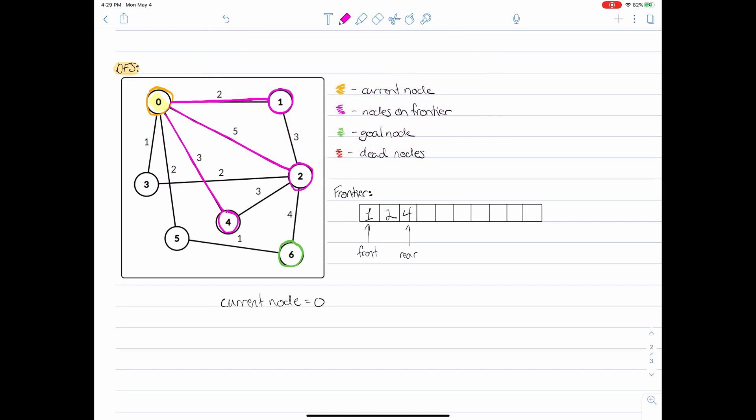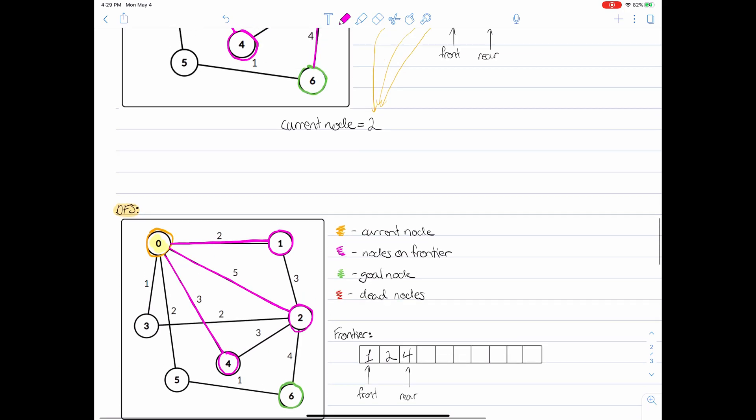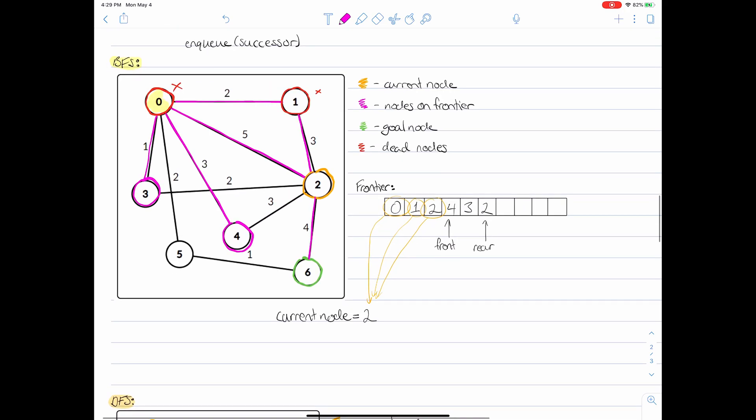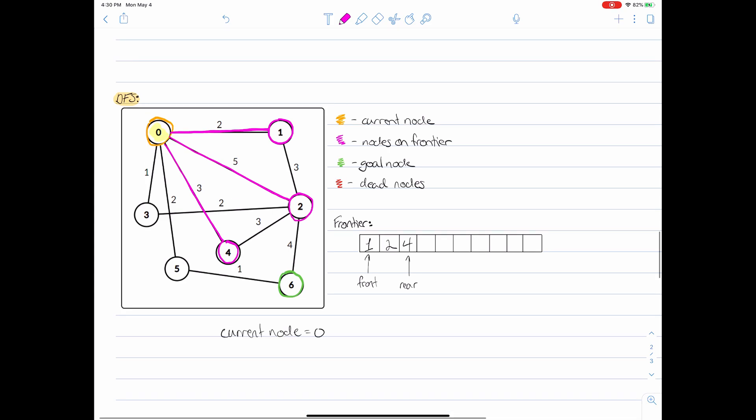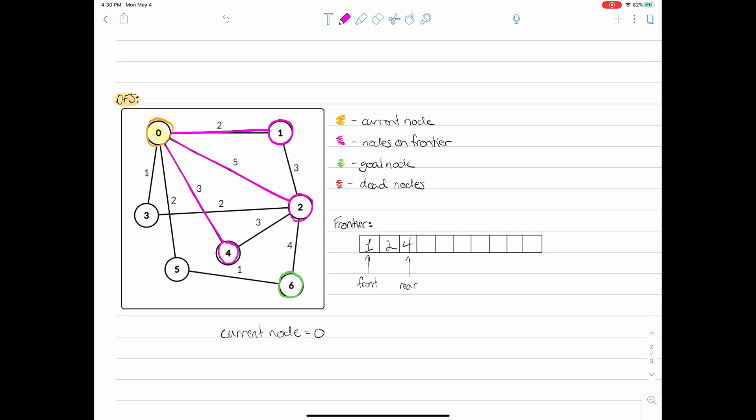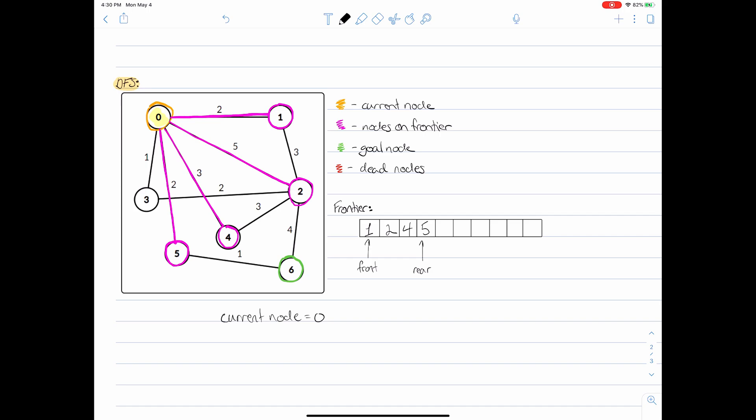Notice that this is actually the exact same process that we went through when we were doing the BFS example. So moving on, the next successor of node zero is this node five just right over here. And then we pop the question: Is node five the goal node? Well clearly it's not. So we need to add that to the frontier. We move this rear node over again and we're going to write five right there.